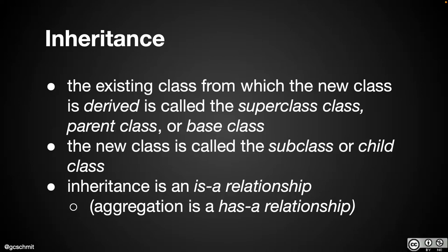A couple of terms you're going to see: the existing class from which the new class is derived, inherits, or extended — we refer to that as the superclass. Sometimes we use the terms superclass and subclass; sometimes, based on the genetics analogy, we use parent class and child class. You may also see the term base class. I'm going to stick with superclass and subclass for consistency, because it mirrors a keyword we'll see when we start writing code.